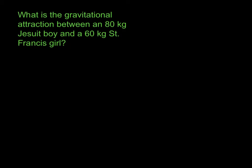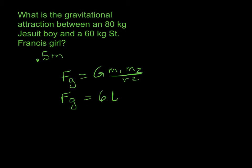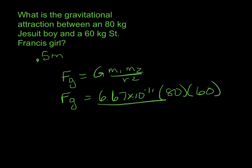Gravitational attraction happens between any two objects that have mass. So take a boy and a girl — they have mass. Let's say they are separated by 0.5 meters, which is pretty close, about half a meter stick. FG equals big G times M1 times M2 over R squared, so FG equals 6.67 times 10 to the minus 11, times the mass of the boy (80 kg), times the mass of the girl (60 kg), divided by 0.5 squared. Don't forget to square that.